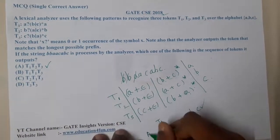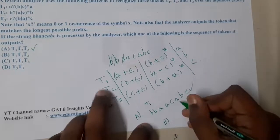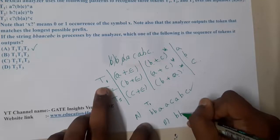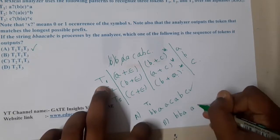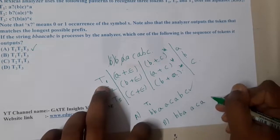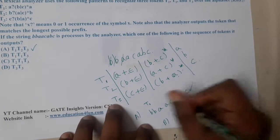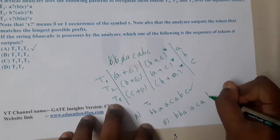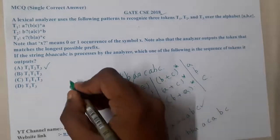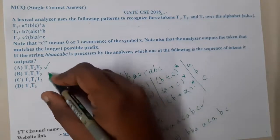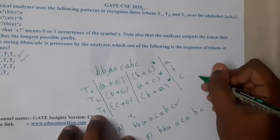Moving on to option B, which says to use T1 twice. In the first round I generate 'b b a', and in the second round I generate 'a c a'. After that I use T3, taking epsilon, then 'b', then 'c'. So option B also appears to be possible.